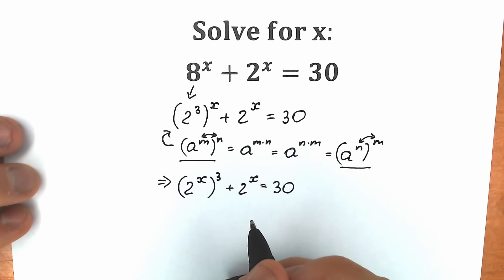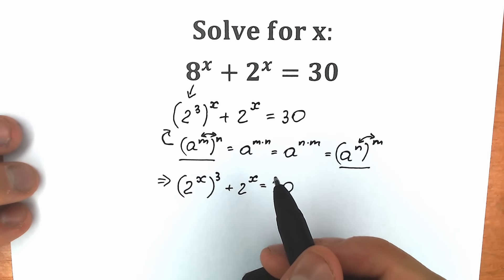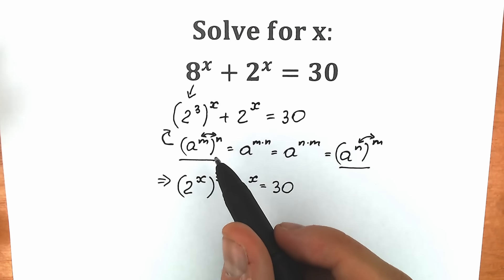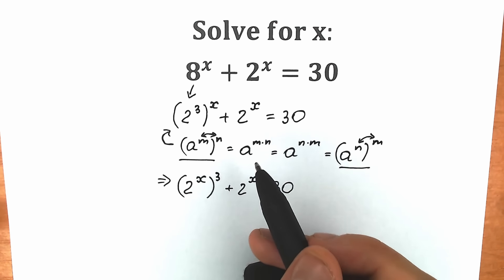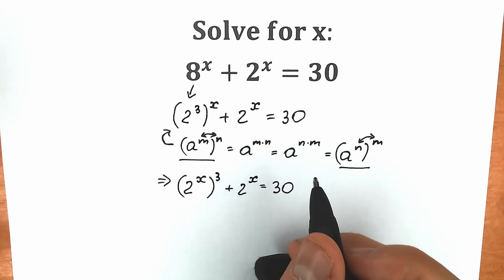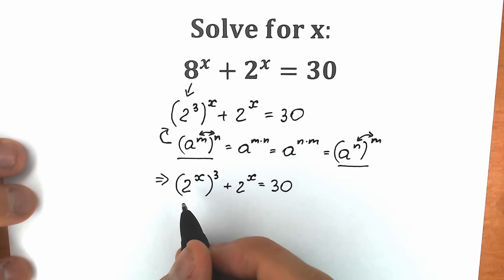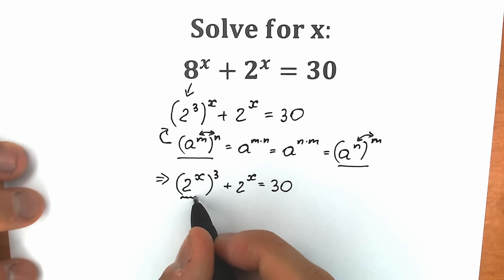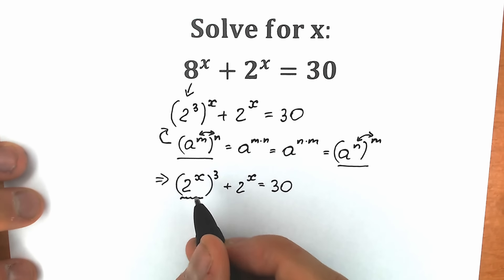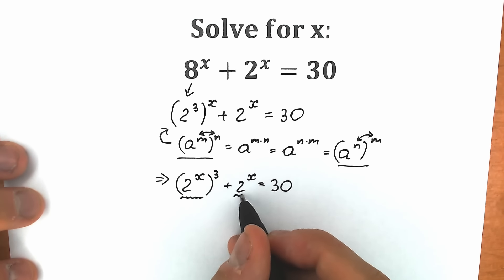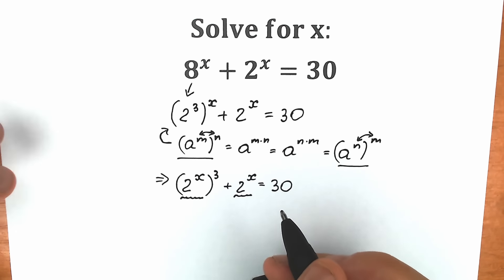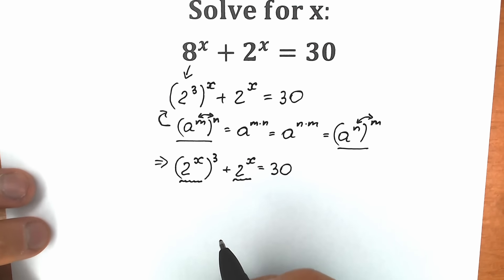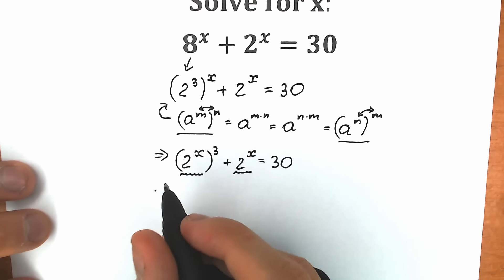I hope you understand this step. Someone calls this the rule of interchange, someone calls this a basic power property, but I hope you understand it. Right now, as I said, we have absolutely the same base and absolutely the same power, so we can easily simplify using substitution.